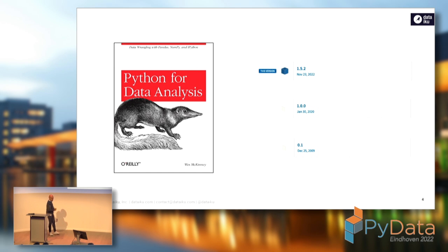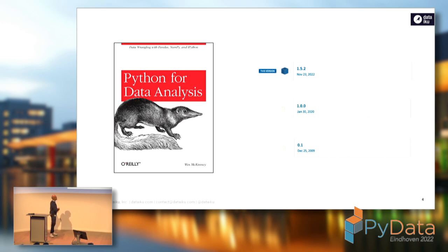When I started as a data scientist back in 2017, everybody was reading Python for Data Analysis, which was basically the user guide for the well-known Pandas library. Fast forward to November 2022, we are now at Pandas version 1.5.2, which has gone a long way since Pandas 0.1, released on December 25th, 2009.